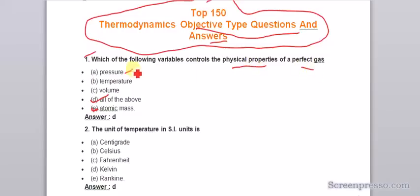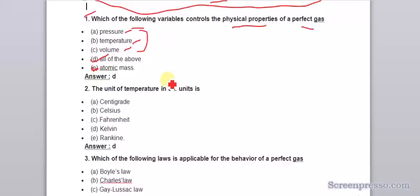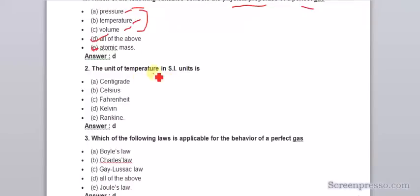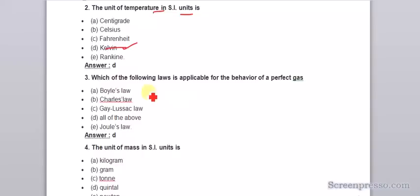Physical properties of a perfect gas are pressure, temperature, and volume. The unit of temperature in SI units is Kelvin.